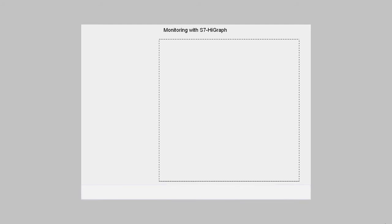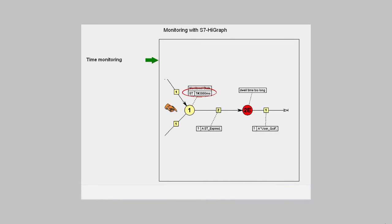Time monitoring indicates whether a transition switches after a fixed time. If after the parameterized monitoring time there is to be branching into a fault state, this is done via a transition with the predefined signal ST expired.